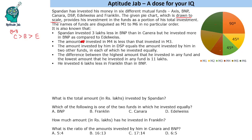M4 is less than M3, so M4 will be less than 45 degrees. Now if we see this part, it is more than 90 degrees. This complete part is less than 45 degrees, and this will be more than 45 degrees. The amount invested by him in DSP equals the amount invested in two other funds, in each of which he invested equally.